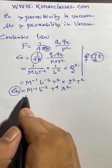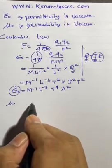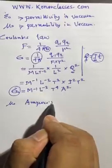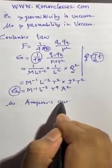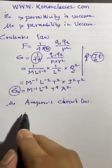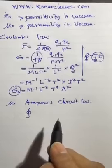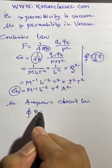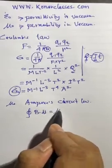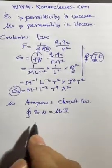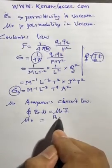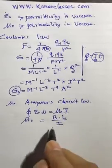Now to find out the dimension of mu naught, we will take the help of Ampere's law. From Ampere's circuit law, the closed integral of magnetic field B and length DL equals mu naught into the current i. From here, considering the dimension part, it is coming B into L by i, where i is the current.